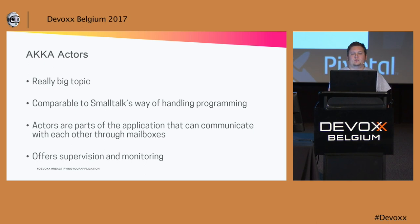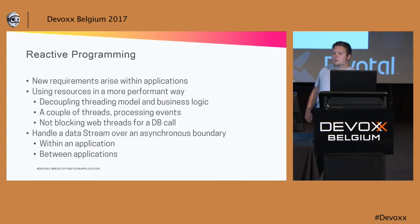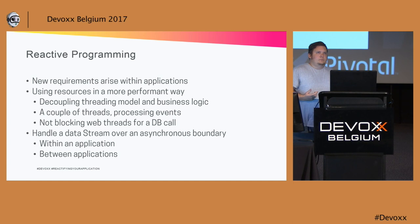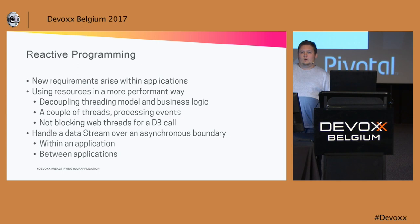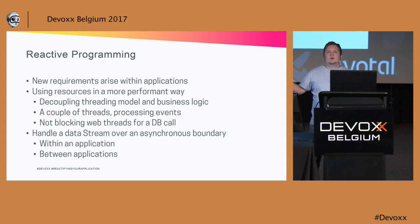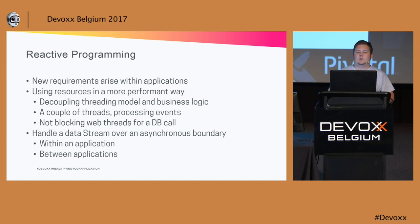From reactive systems, through reactive programming, where we try to supply a better programming model to help build reactive systems, we're going to try to use resources in a more performant way. We do this by creating asynchronous boundaries in our application. So instead of just calling the database, waiting for the result, and then giving the result to the user, we're going to ask the database for information and then subscribe ourselves to the result and work in a declarative way.